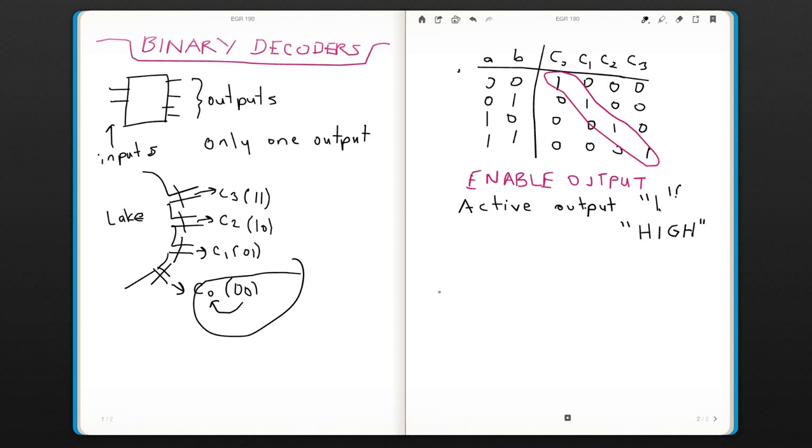So there are different decoders. This is an active high decoder that we're talking about, but there is also a possibility to have an active low decoder. In this case, everything is the same in terms of forming the truth table. But this time, because it is active low, this is active low.